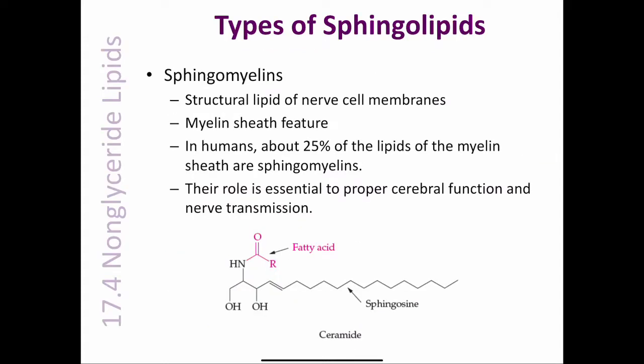Sphingomyelins are located throughout the body, but are particularly important structural lipid components of nerve cell membranes. They are found in abundance in the myelin sheath that surrounds and insulates cells of the central nervous system. In humans, about 25% of the lipids of the myelin sheath are sphingomyelins. Their role is essential to proper cerebral function and nerve transmission.